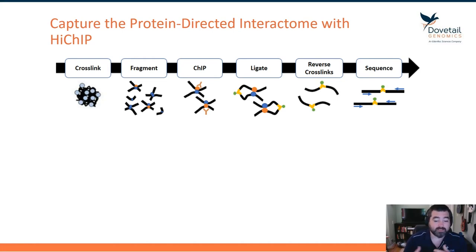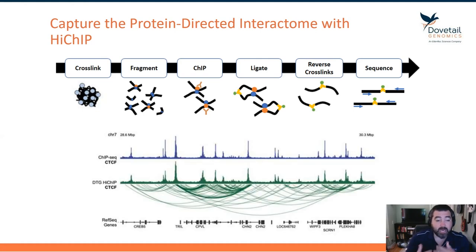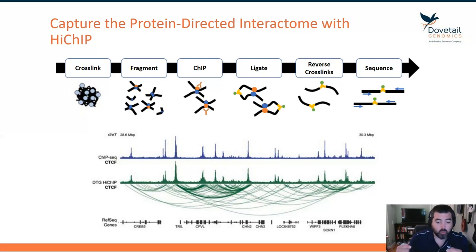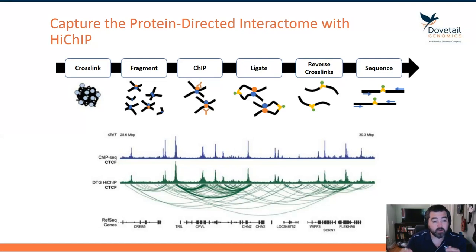After reversing the cross-links and sequencing, the resulting data captures that DNA-protein binding site. On the blue line, I'm showing ChIP-seq data for CTCF. In the green track below, I'm showing Hi-CHIP data where we can recapitulate those ChIP-seq peaks, and below that are the contact arcs showing how these peaks interact with the surrounding genome.